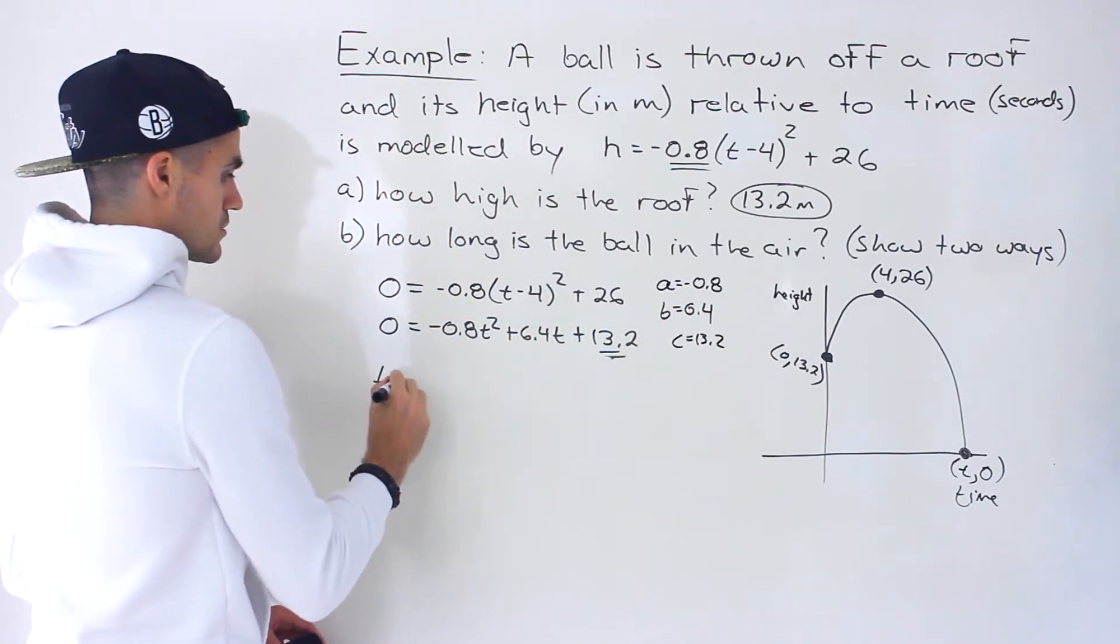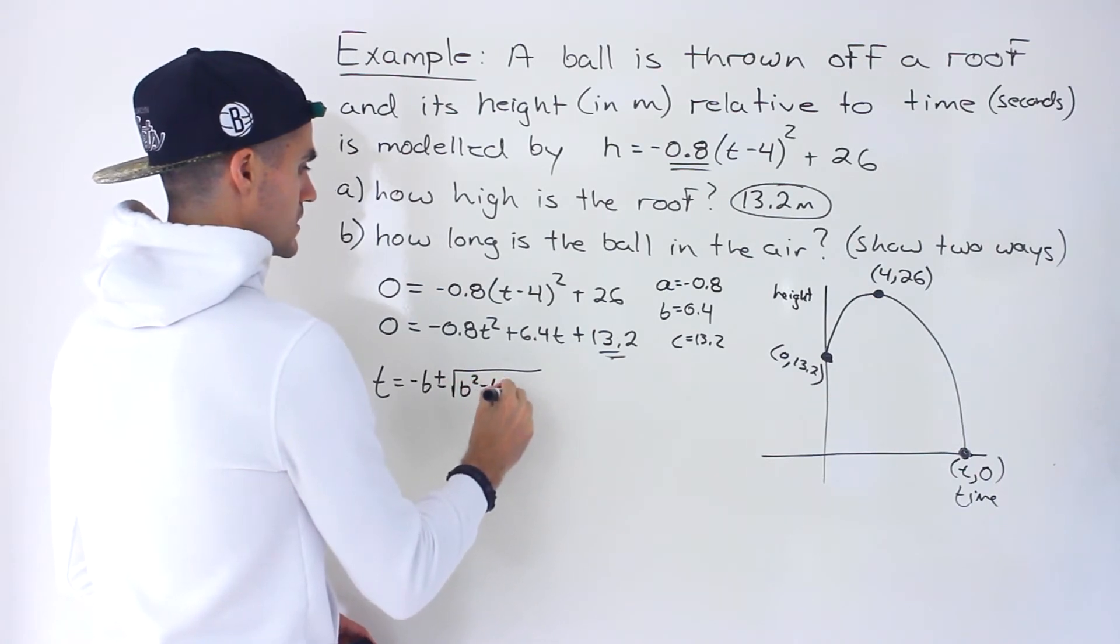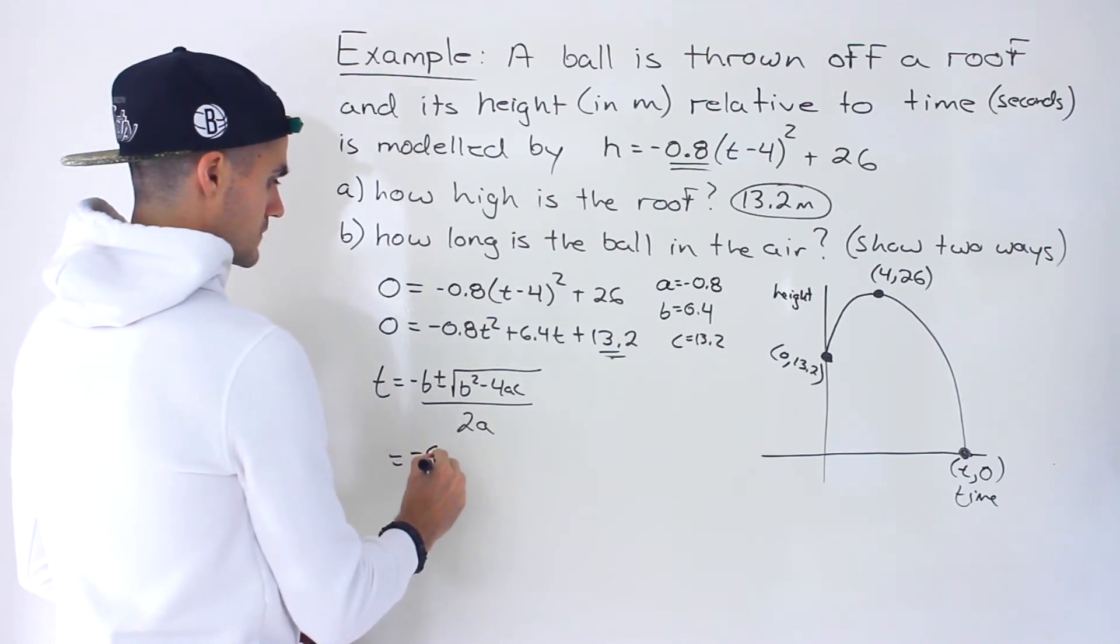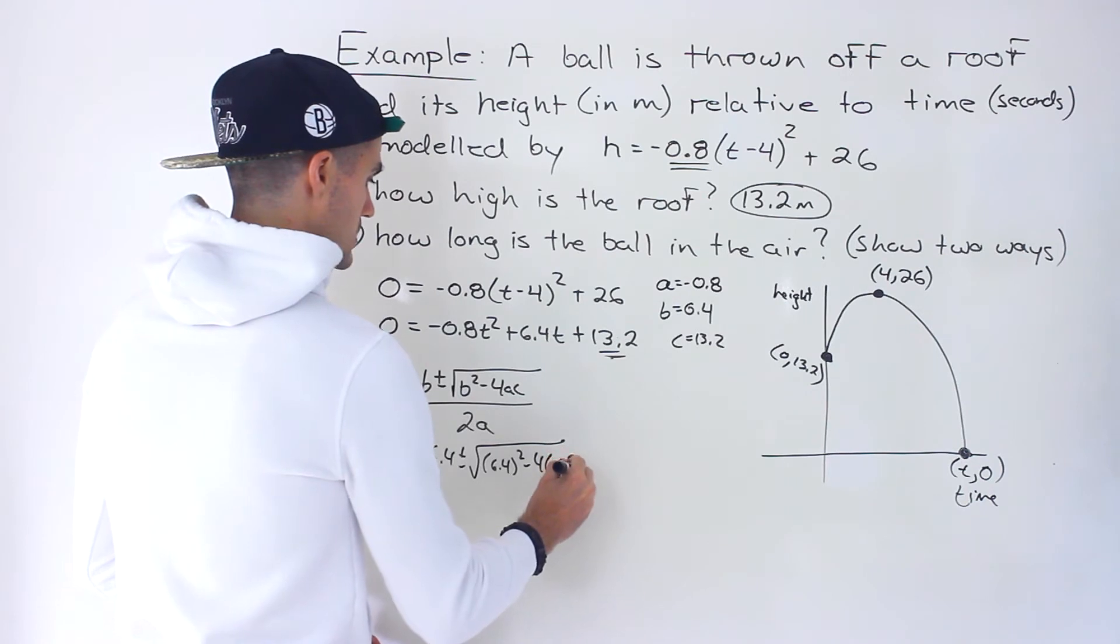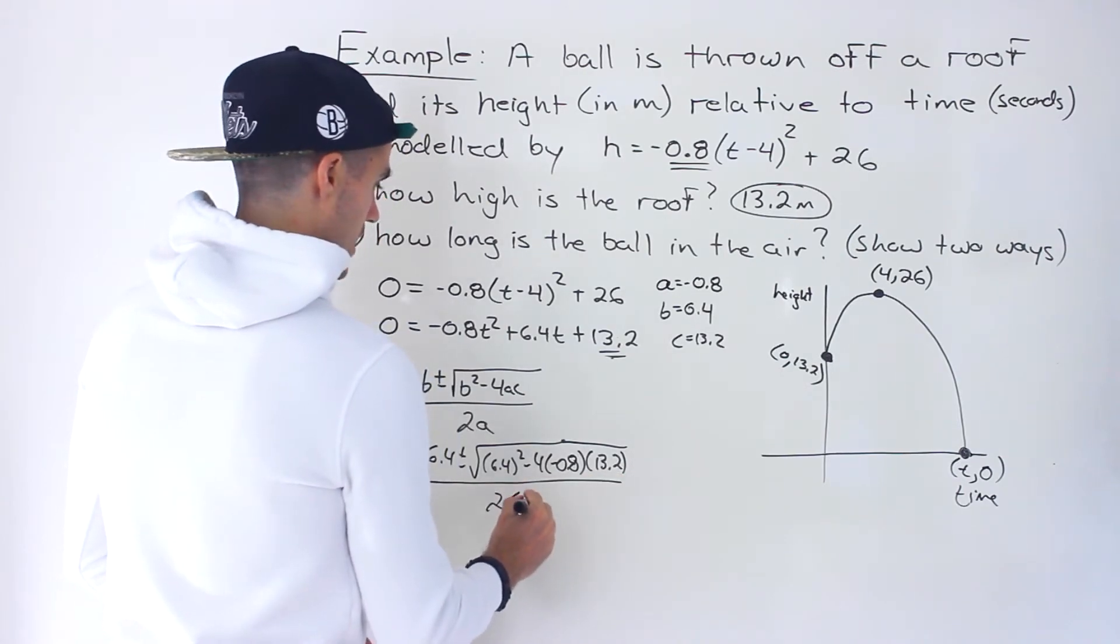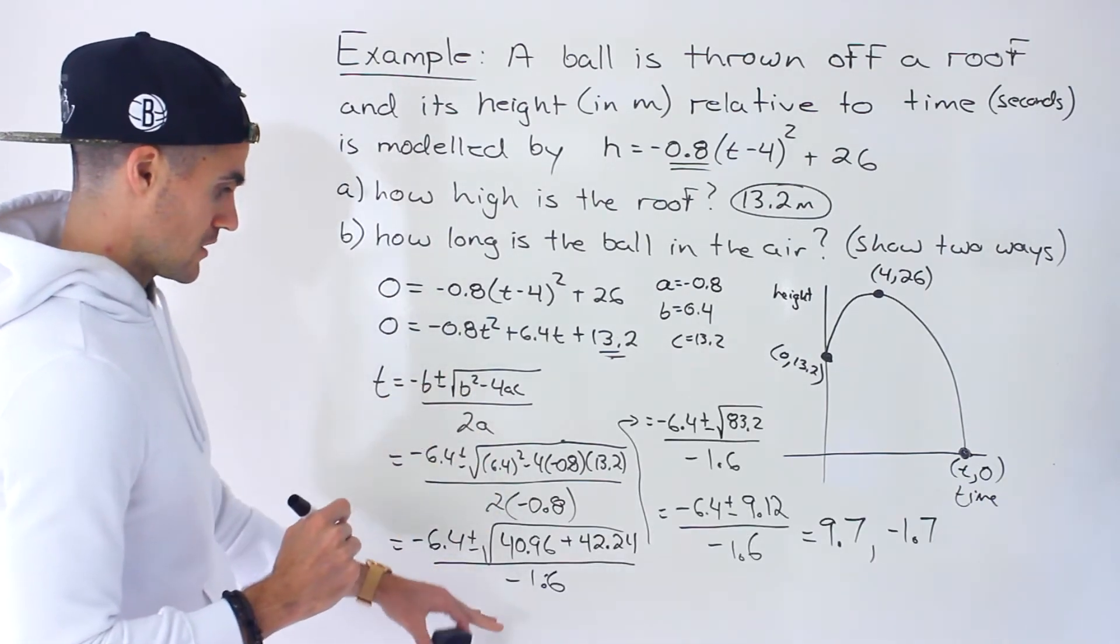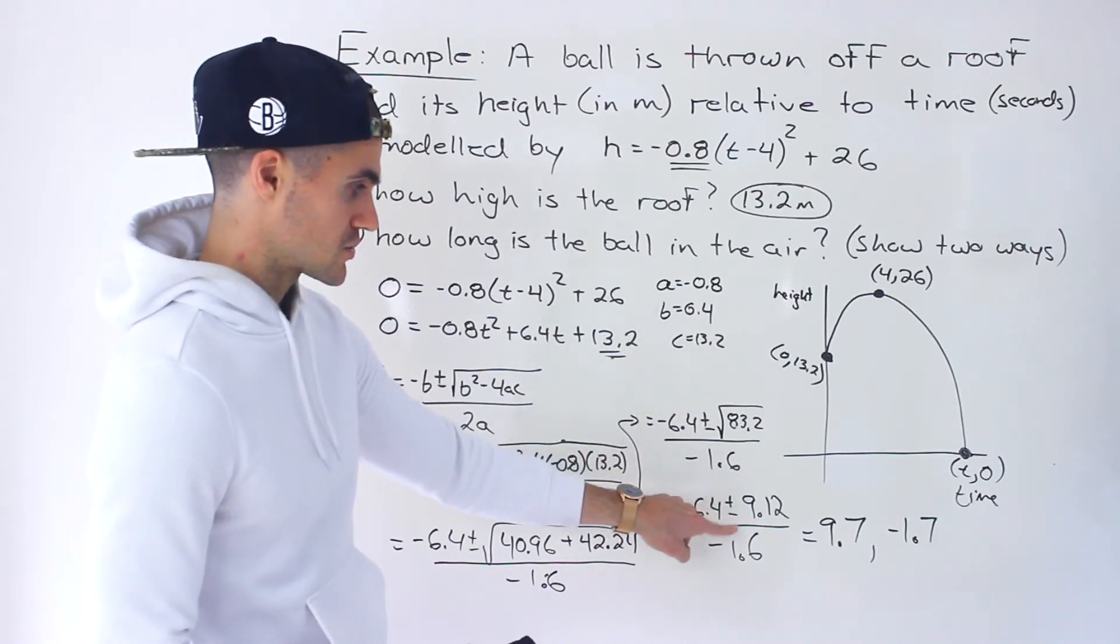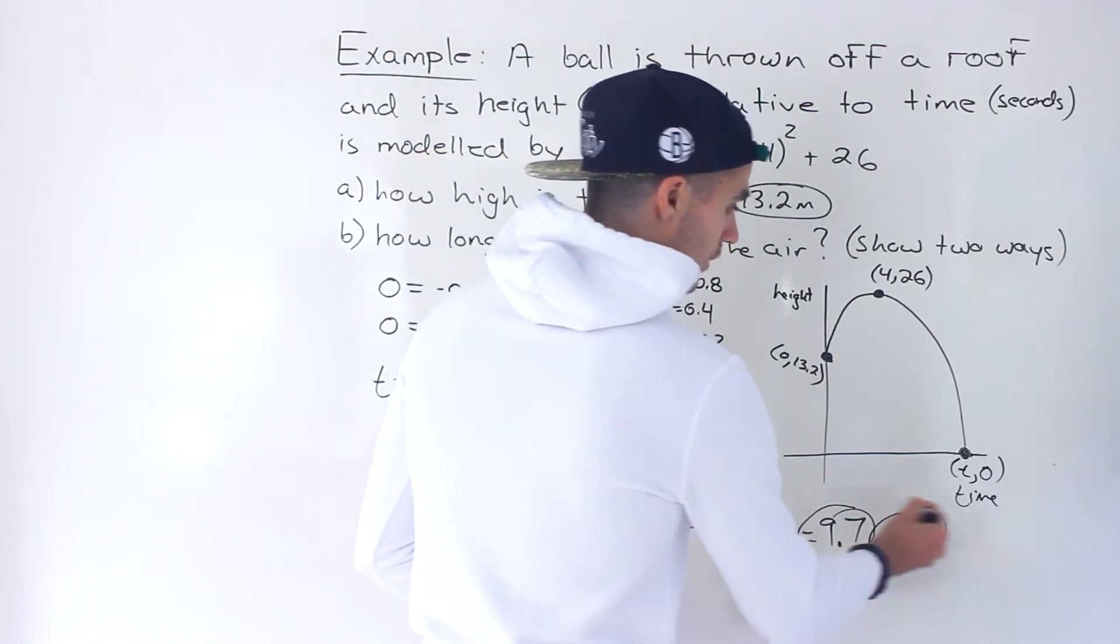We can now take those and plug it into that quadratic formula, which is negative b plus or minus the square root of b² minus 4ac all over 2a like that. So we just have to now plug in these parameters. So negative 6.4 plus or minus, then we'll have b² which is 6.4² minus 4 times negative 0.8 times the c value of 13.2, all over 2 times the a value of negative 0.8. So lots of decimals to work with. We're going to do all of this algebra. This here is what it would be. You would end up having 83.2 under the square root. So square rooting that plus or minus 9.12, and so you'll get two different solutions there. You'll either get 9.7 or negative 1.7.